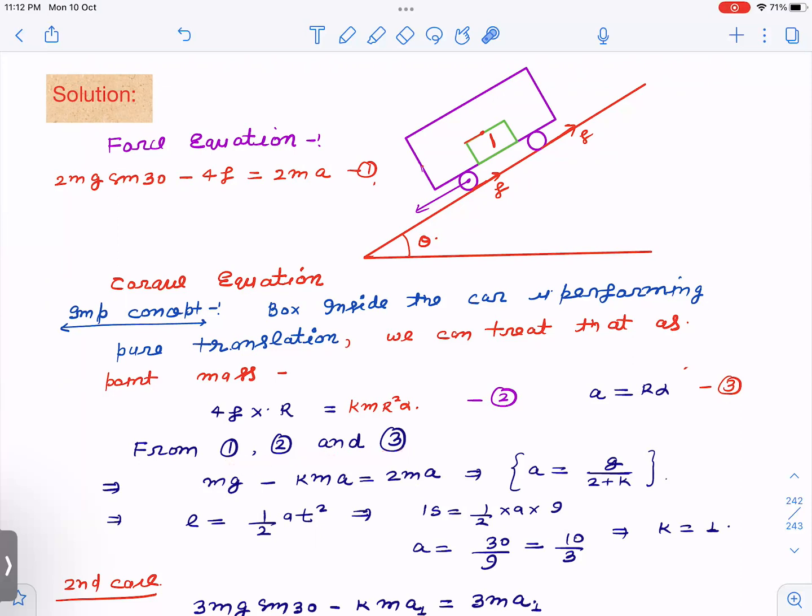From these three equations, 4f is kma, so I have substituted here and I found a is g divided by 2 plus k. And to calculate a, data is already given in the question - that is 15 meters in 3 seconds. So a is 30 by 9, so k is calculated as 1.